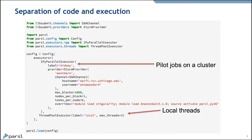One way to look at this is that we have different executors. For example, pilot jobs on a cluster — Midway is a cluster at Chicago. We use a config object to set everything up. That config object specifies options about the channels between where you're running the notebook and where you want to run the tasks, what the provider is and how you interact with the queuing system, queuing-system-specific things, and any extras. This is all fairly well documented with a read-the-docs page that gives a four-step guide to setting up a configuration.